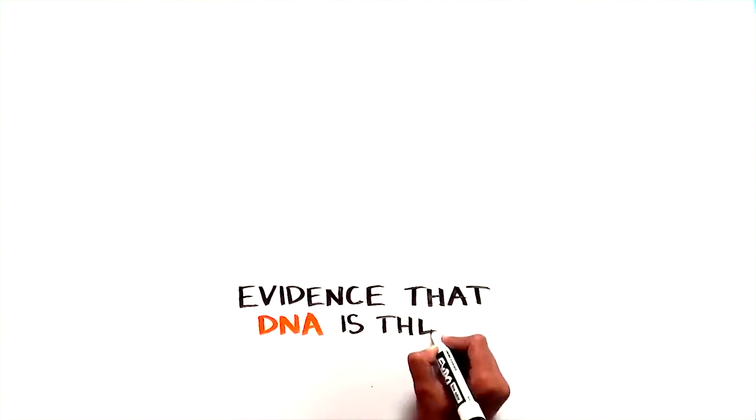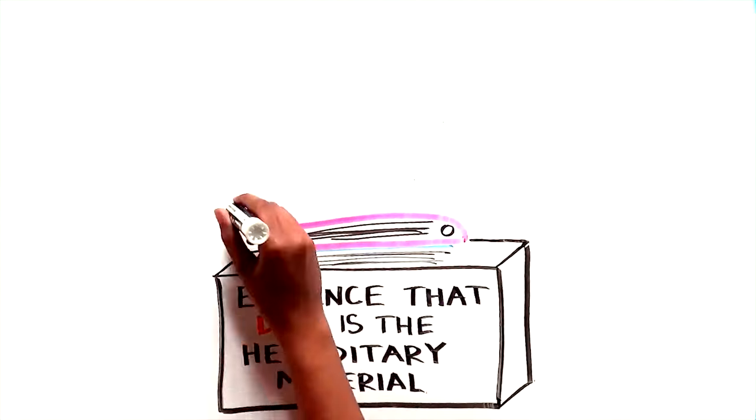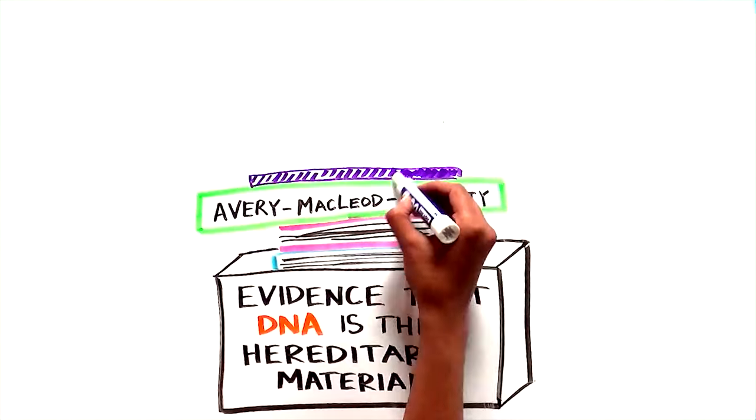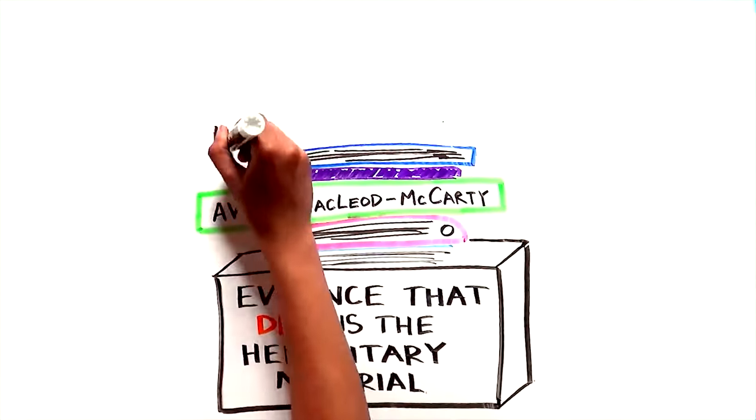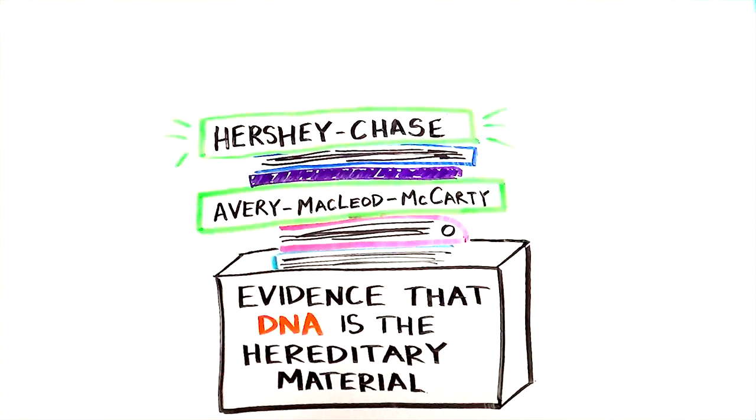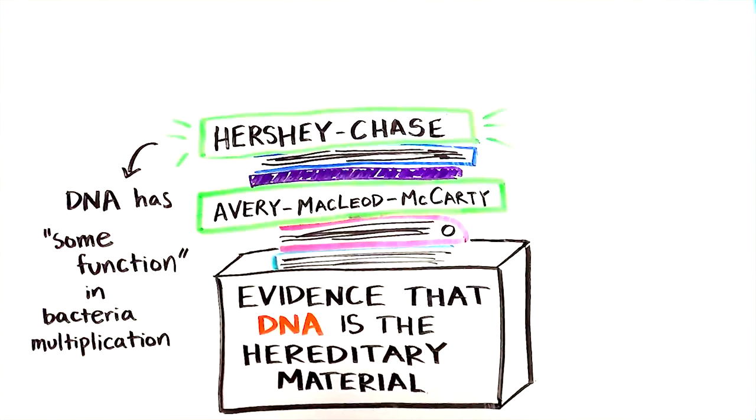Hershey and Chase added to the mounting evidence pointing the finger at DNA as the hereditary material. But they were aware that their experiments left a few unanswered questions, as experiments often do. And they were cautious in their conclusions. From their observations, they stated that DNA had some function in the multiplication of the virus, whereas proteins did not.